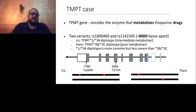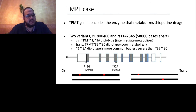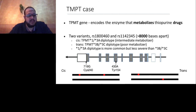Here is an example using TPMT, a gene that encodes the enzyme that metabolizes certain drugs. There is a possibility that two variants can occur in the TPMT gene that are 8 Kb apart. In the cis case, both variants happen in one copy of the enzyme while the other copy is still working, meaning the patient is still able to metabolize drugs.